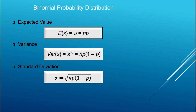For the binomial probability distribution, there are simple formulas for the mean and variance. The expected value is simply n times p — the number of trials multiplied by the probability of success — giving the expected number of successes in n trials. The variance equals n × p × q, where q = 1 − p, the probability of failure. The standard deviation is the square root of the variance.